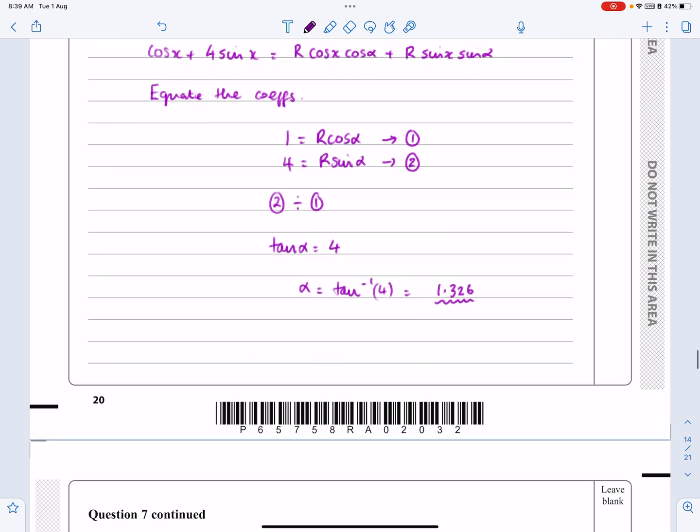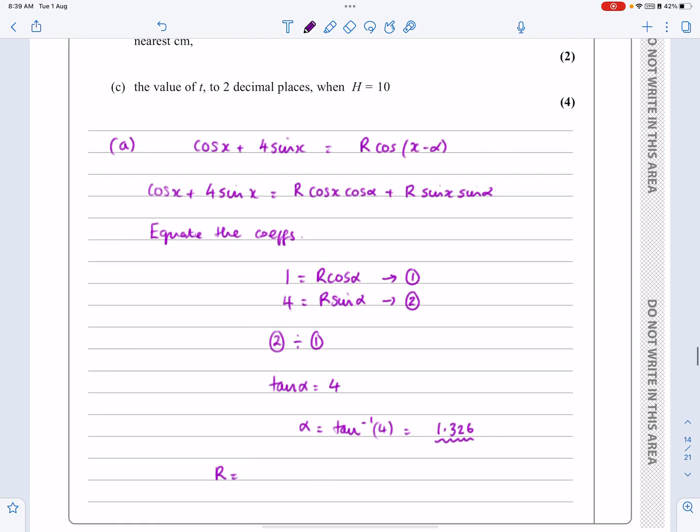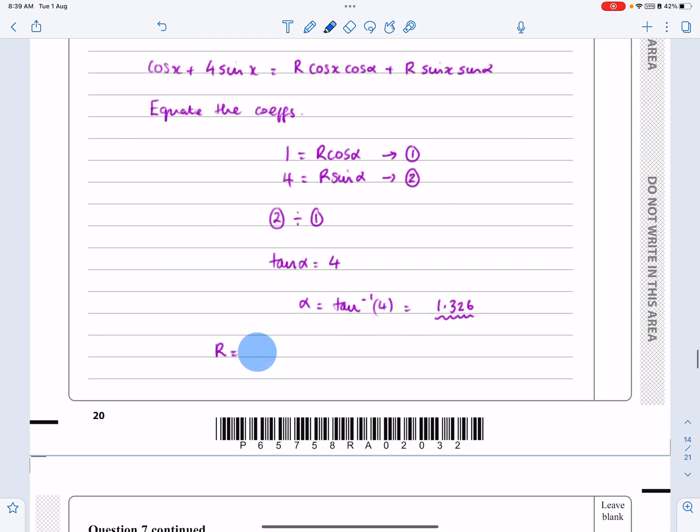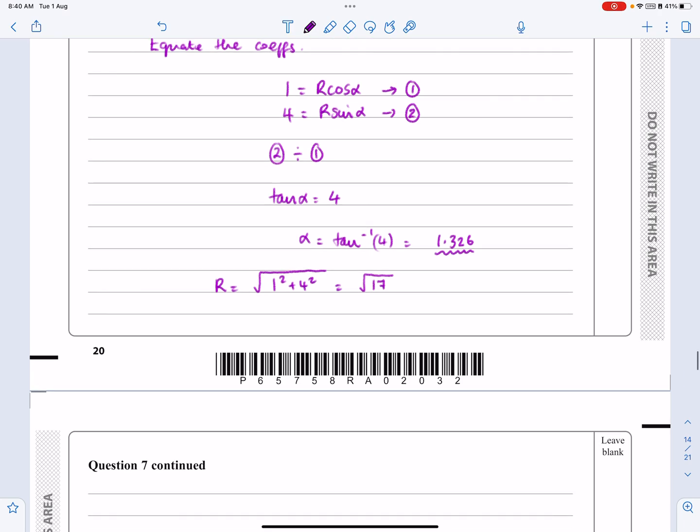When I'm working out R, if I go back here and again, if I think about these two coefficients, 1 and 4 here, then R is simply equal to the square root of 1 squared plus 4 squared, which in this case gives me root 17, which is the exact value. So, just make sure we answer the question at the end.